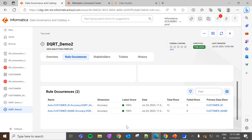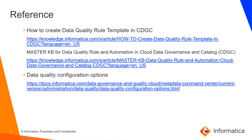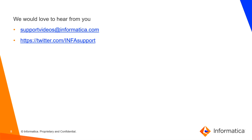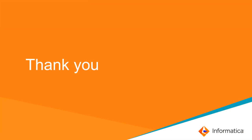This is how data quality rule template creates auto rule occurrences with these options. You can refer to the following article for more information — the master KB displayed on the screen will teach you how to use data quality rules on data elements in CDGC from scratch. You can also find the master KB link in the video description. We would love to hear from you — please give your feedback in the link displayed on the screen or in the comment section. Thank you, have a nice day.